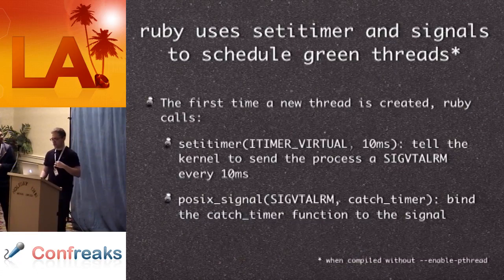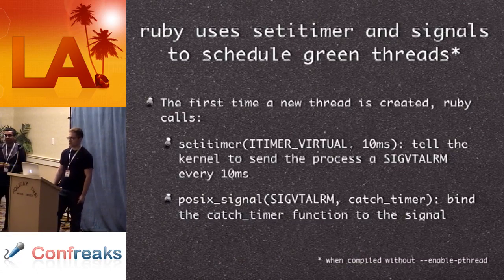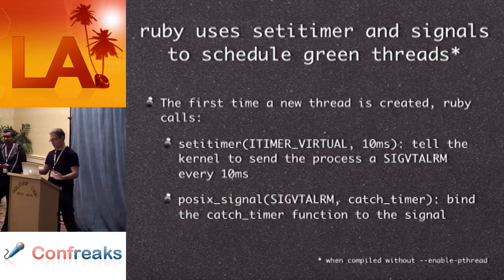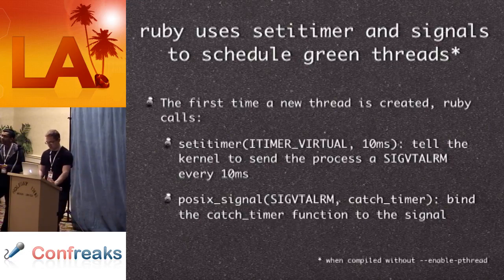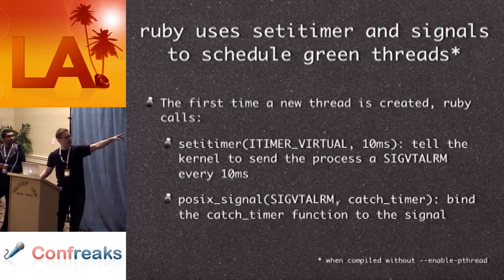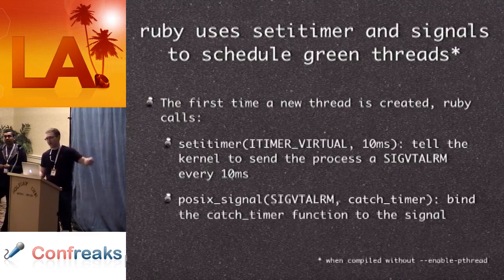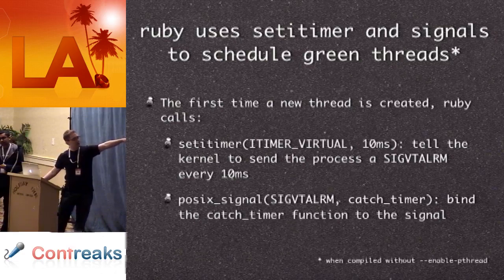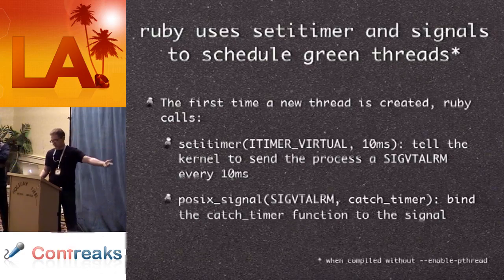It turns out that Ruby uses a system call called setitimer and signals to schedule green threads. This only happens when you're not building Ruby with --enable-pthread, which we'll get into in a little bit. But the first time a new thread is created in Ruby, Ruby calls setitimer to create a timer, and it tells the kernel: every 10 milliseconds, send me a SIGVT alarm. And when Ruby gets that signal, it fires a handler called catch-timer. The second call there — posix signal — is attaching that handler to that signal.